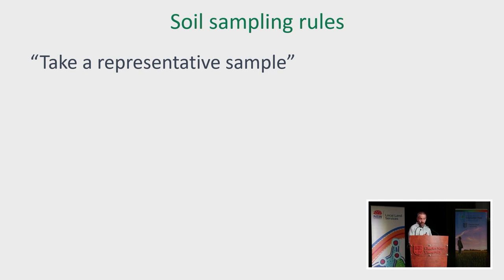You have a range of information at your fingertips already — satellite imagery that's free, NDVI images which are free, and depending on what system you use, either easier or a bit more complicated to get. But the biggest asset you have is farmer knowledge. Every farmer can take you to a paddock and explain where the good bits and bad bits are, and some of those bits will be different in dry years, wet years, wet springs, dry springs. All that information is just layers that you can build to understand where differences exist, and those differences then become zones that you sample and ultimately manage.